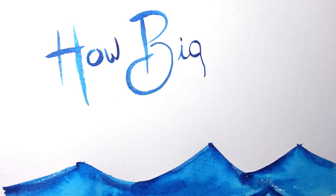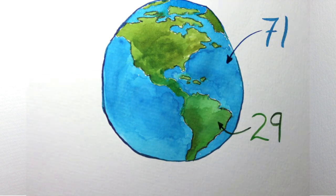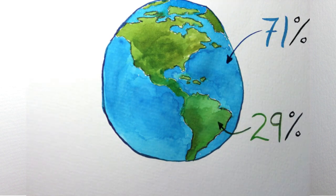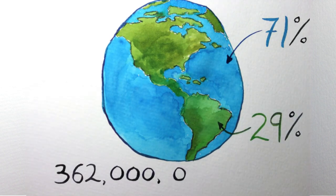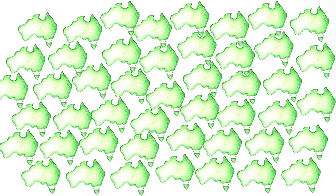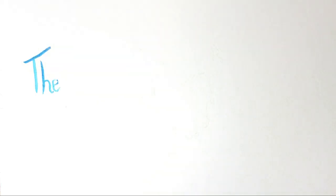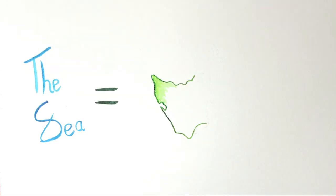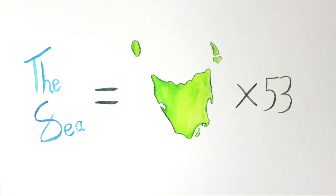How big is the sea? The oceans cover over two-thirds of the Earth's surface and have a surface area of about 362 million square kilometres. That number sounds pretty big, but what does it mean? Well, the whole of Australia is 7.7 million square kilometres, so it would take 47 Australias to cover the whole ocean. And Tassie is only 68,000 square kilometres, so the sea is 5,300 times bigger.